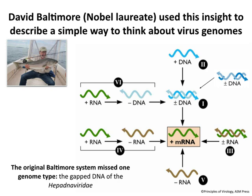David Baltimore — a Nobel laureate who discovered reverse transcriptase, and we'll talk about his work a bit later — in the 1970s organized these viral genomes in a way that makes a lot of sense. This is called the Baltimore Scheme. He had, at the time, six different viral genome types; we had not yet discovered the hepatitis B virus and its genome, which is number seven. So we've added that to the scheme. What Baltimore did was put mRNA in the middle and show how the six — now seven — different genome types get to mRNA. That's the Baltimore Scheme.